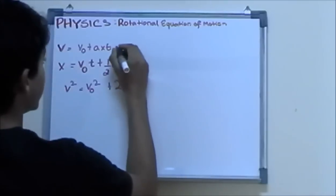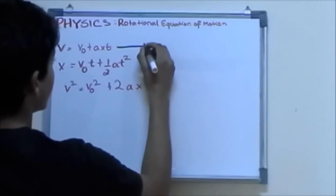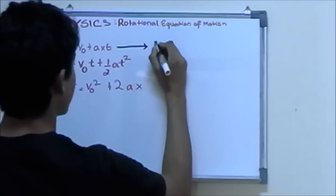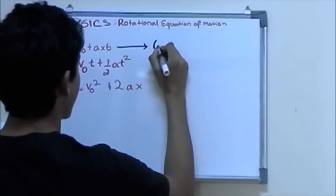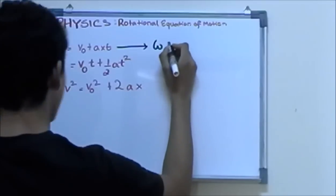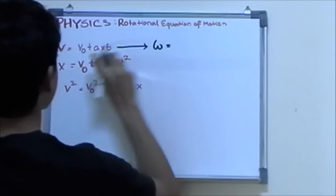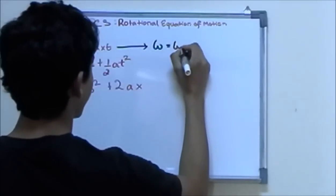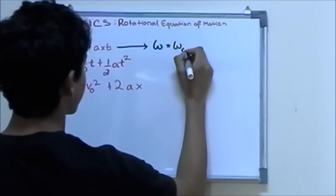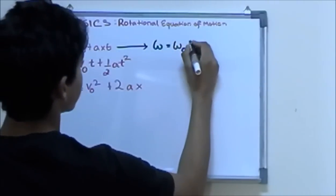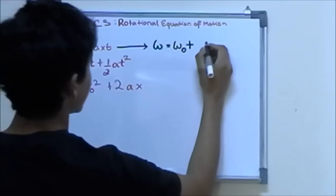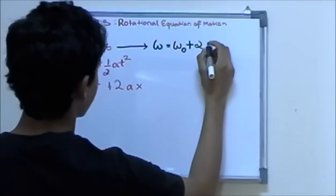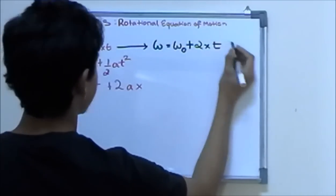— what you would do is replace V with omega, because omega tells us the angular velocity. So omega is equal to initial omega plus alpha — which is angular acceleration — times time.